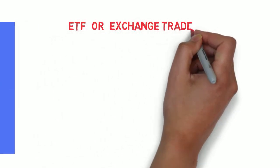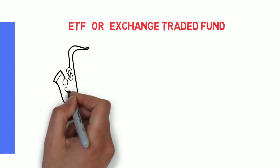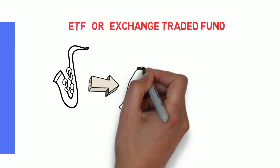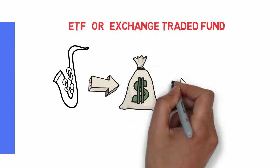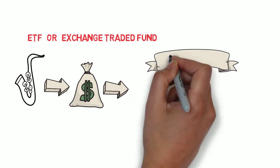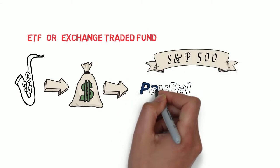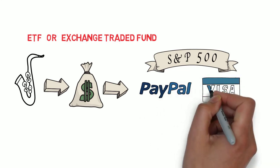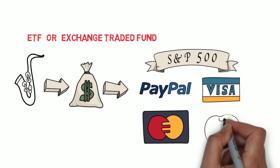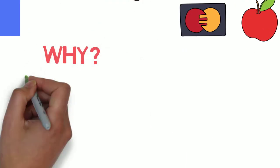An exchange traded fund, better known as an ETF, is a type of financial instrument that allows you or an institutional investor to trade into and out of broader based exchanges, but to trade into it as one tradable stock. If you take one like the S&P 500, which is a conglomerate of 500 of the largest companies into one index, it allows you to trade it as one tradable stock.